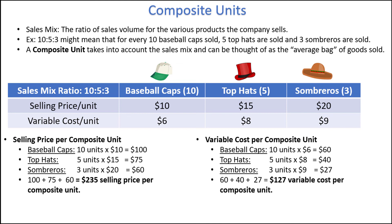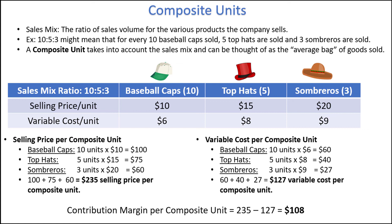We can find the contribution margin per composite unit just like we always do, by taking the sales and subtracting the variable costs. So the contribution margin per composite unit is equal to $235 minus $127, which is equal to $108.